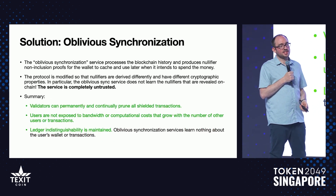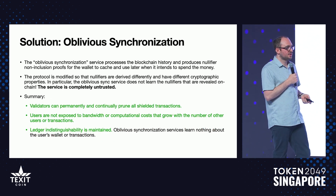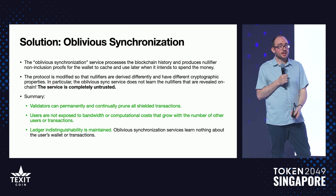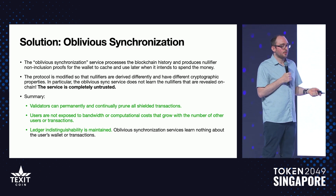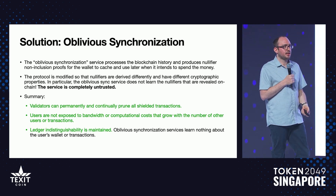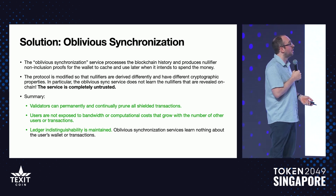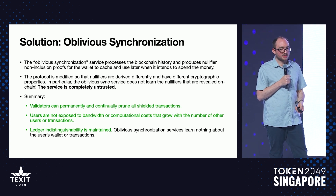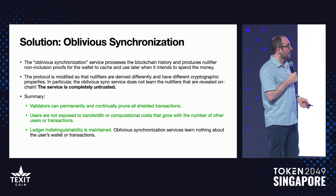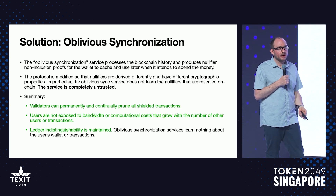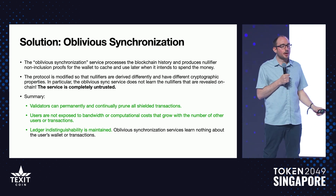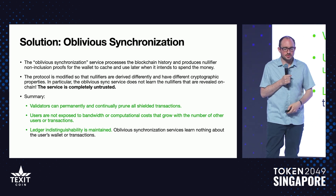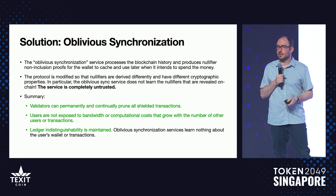The solution we came up with is called oblivious synchronization — a general technique that allows a remote service to prove we haven't spent our money without seeing any information we end up posting on chain. So they can't distinguish our transactions and we don't trust them at all. With this approach, validators don't have to store all the nullifiers, users aren't exposed to bandwidth and computational costs that scale with the number of other users, and we don't compromise on ledger indistinguishability.